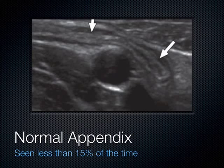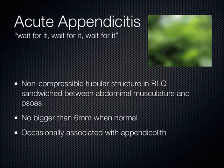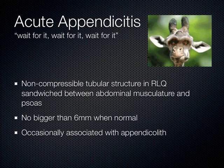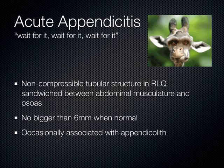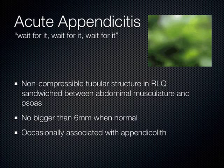When you look for the appendix, you search for that non-compressible tubular structure in the right lower quadrant sandwiched between the abdominal musculature and the psoas muscle. You mow the lawn down in that right lower quadrant — transverse, sagittal — and all of a sudden it pops its head out at you, then it's gone again. You hit freeze and scroll back, or keep compressing. There's a lot of art here — it's very operator-dependent, but over time you do get better.